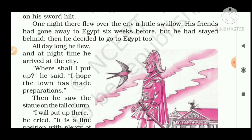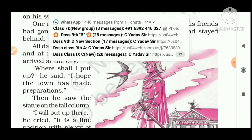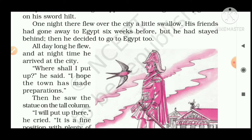The swallow said to himself, 'Where shall I put up? I hope the town has made up a good reputation.' After flying a long distance, the bird felt tired and decided to stay the night in the city. So he chose a place. When he saw the city, he guessed that the city was making some preparation — it may be that some vacation or function was about to be held.